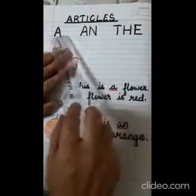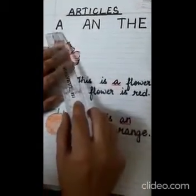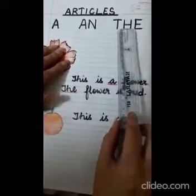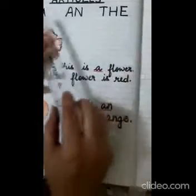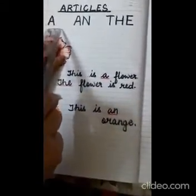Good morning children. Today in English language we are going to do articles. I suppose you have been doing it since class 1. An article is a word that comes before a noun. There are three articles: A, An, and The. So let's see first where do we use article A.